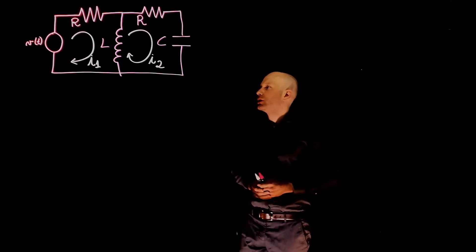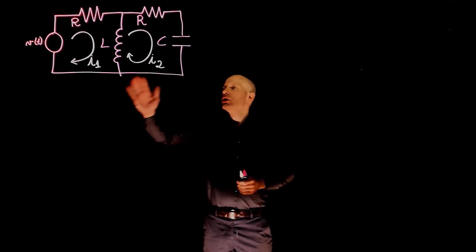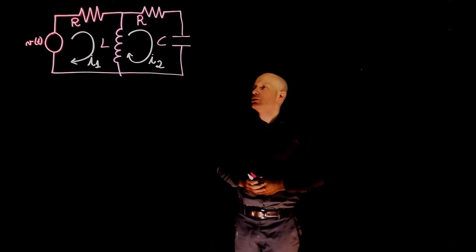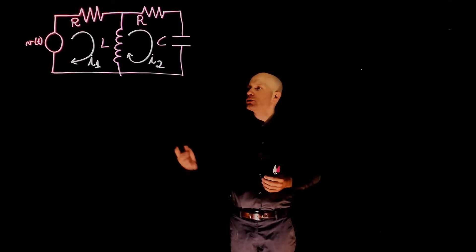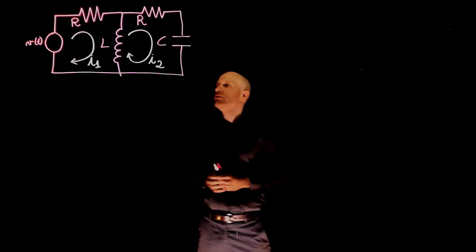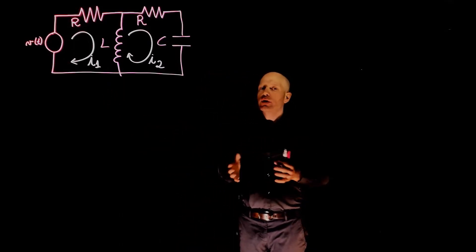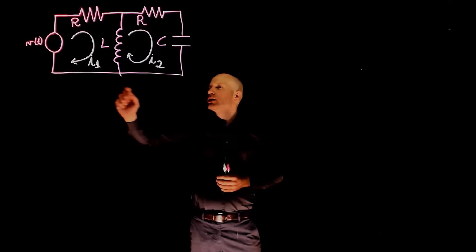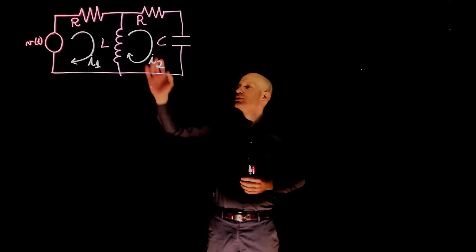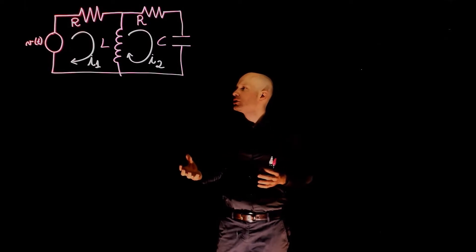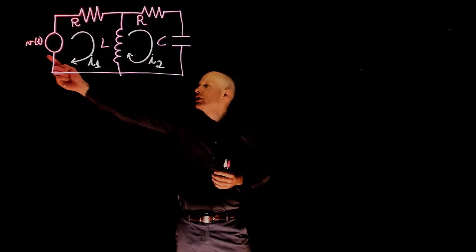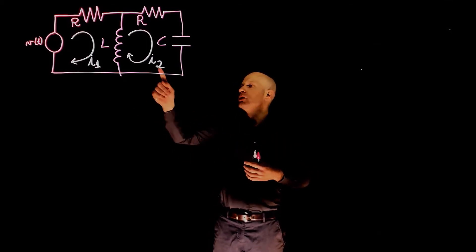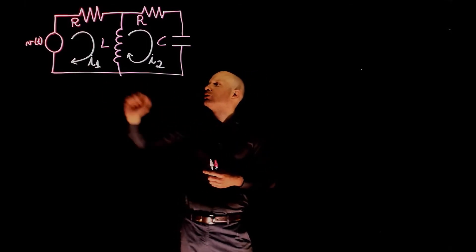In this example we are interested in the relation between the input voltage and the output current, which we consider to be the current through the secondary loop. We are looking for the transfer function I2 divided by V. To find this transfer function we first need to relate I2 to V, and that can be done by applying Kirchhoff's law to both loops, creating two expressions — the first one relating I1 and V, and the second relating I1 and I2 — and then combining them to find the relation between I2 and V.